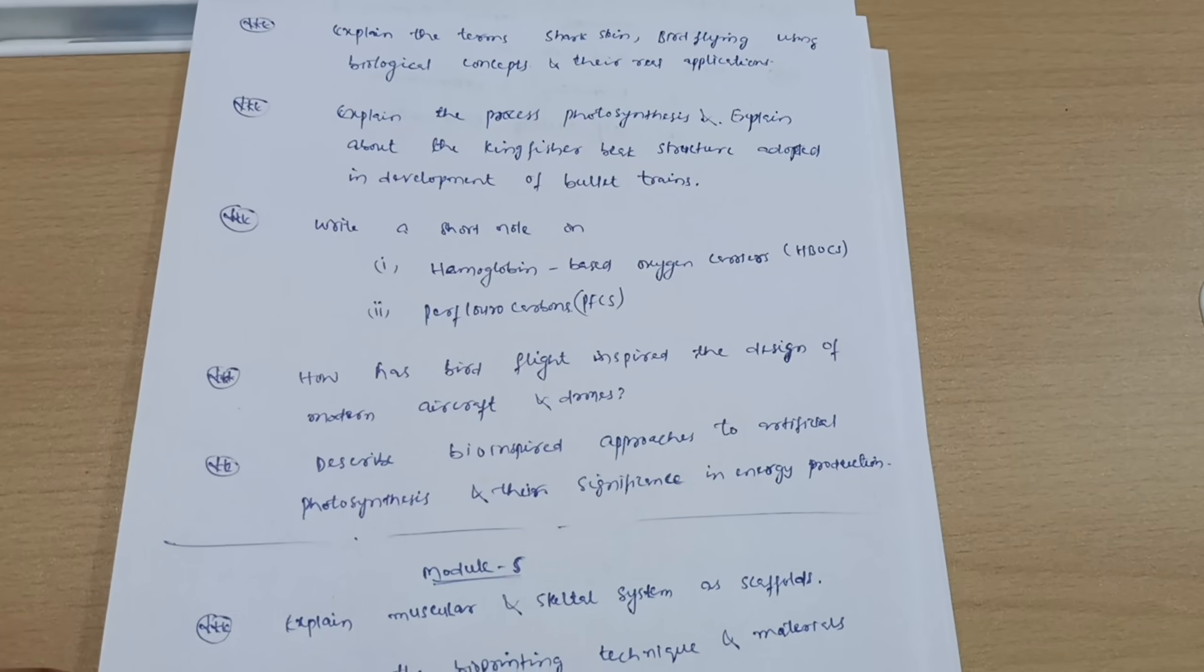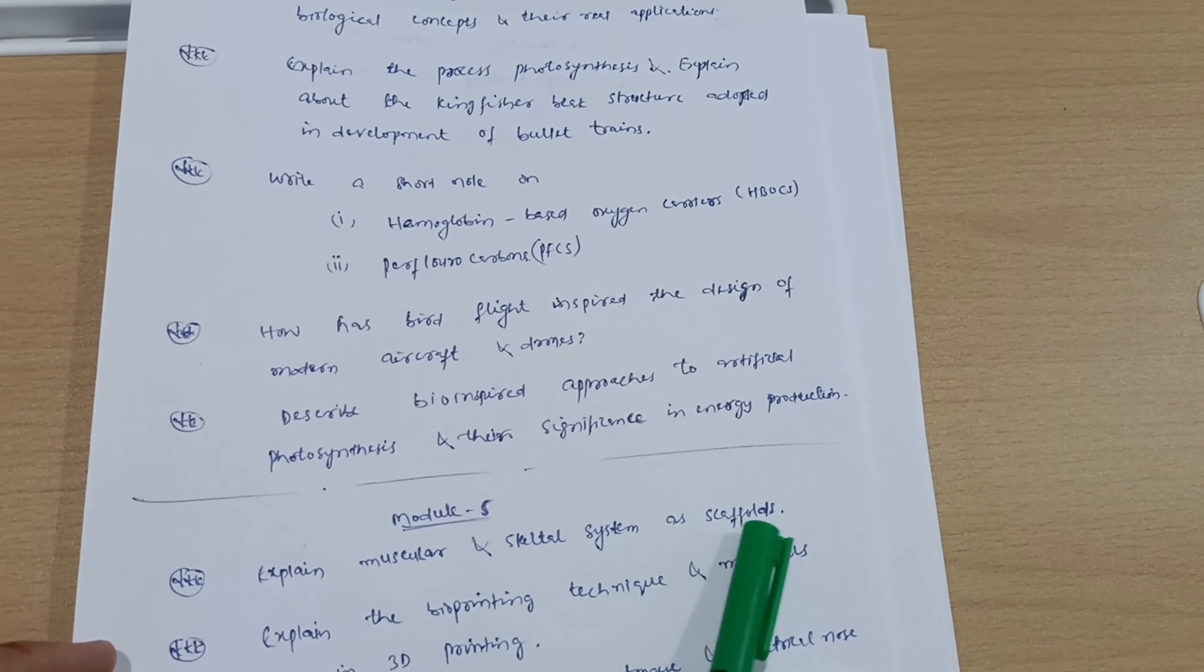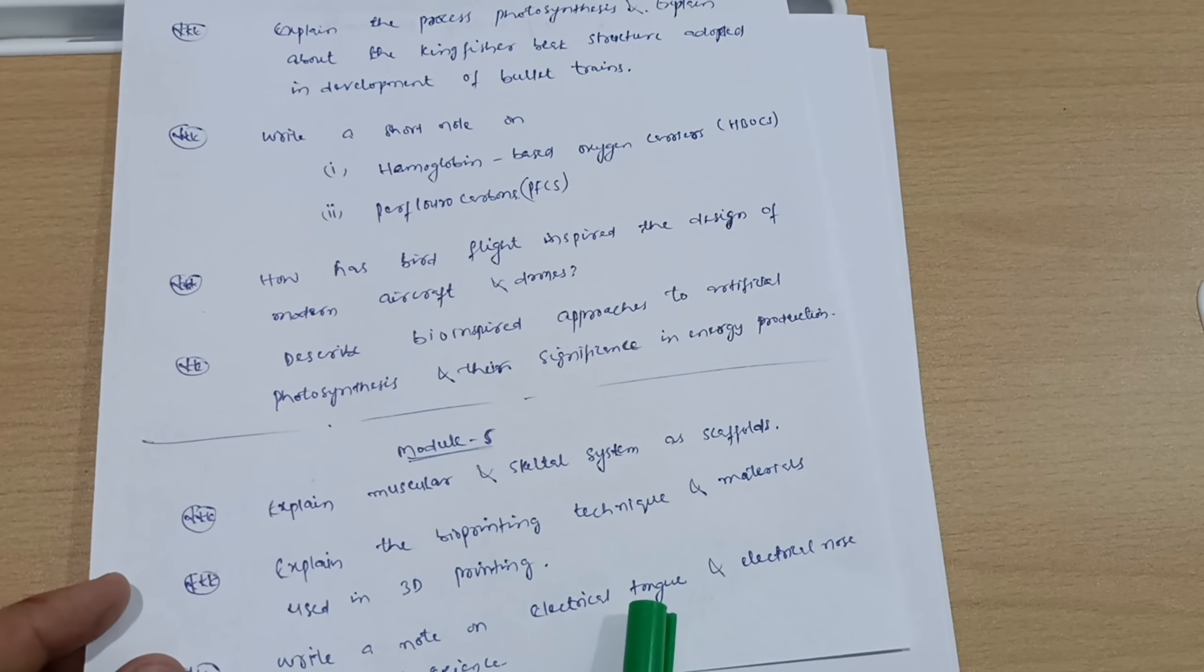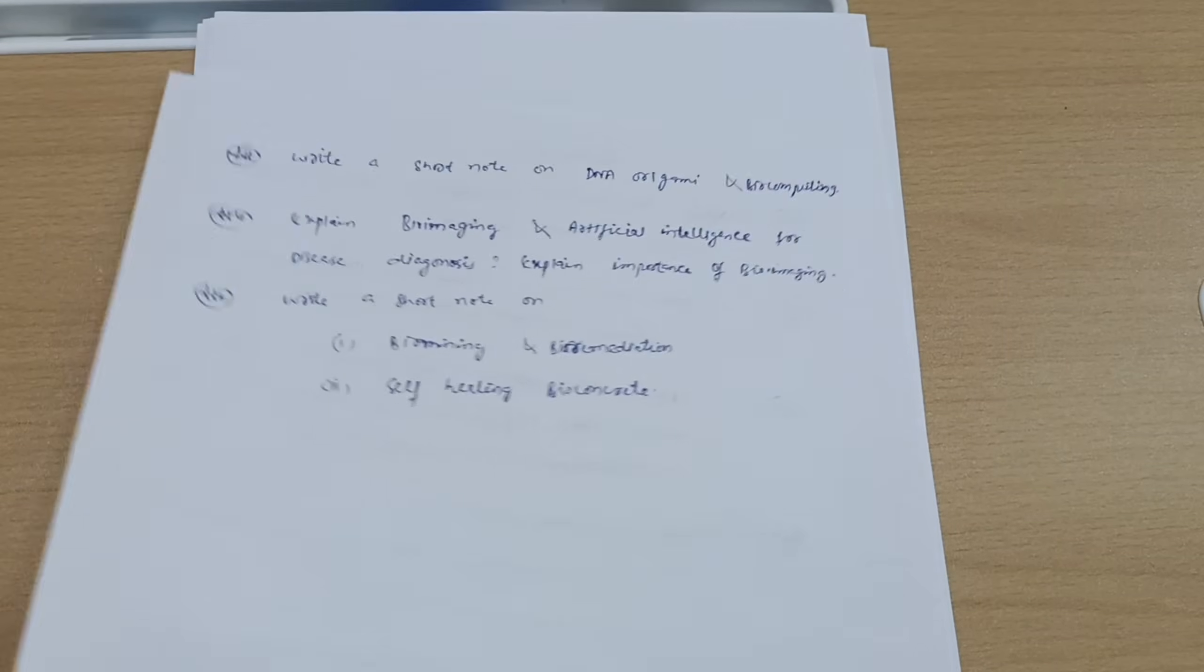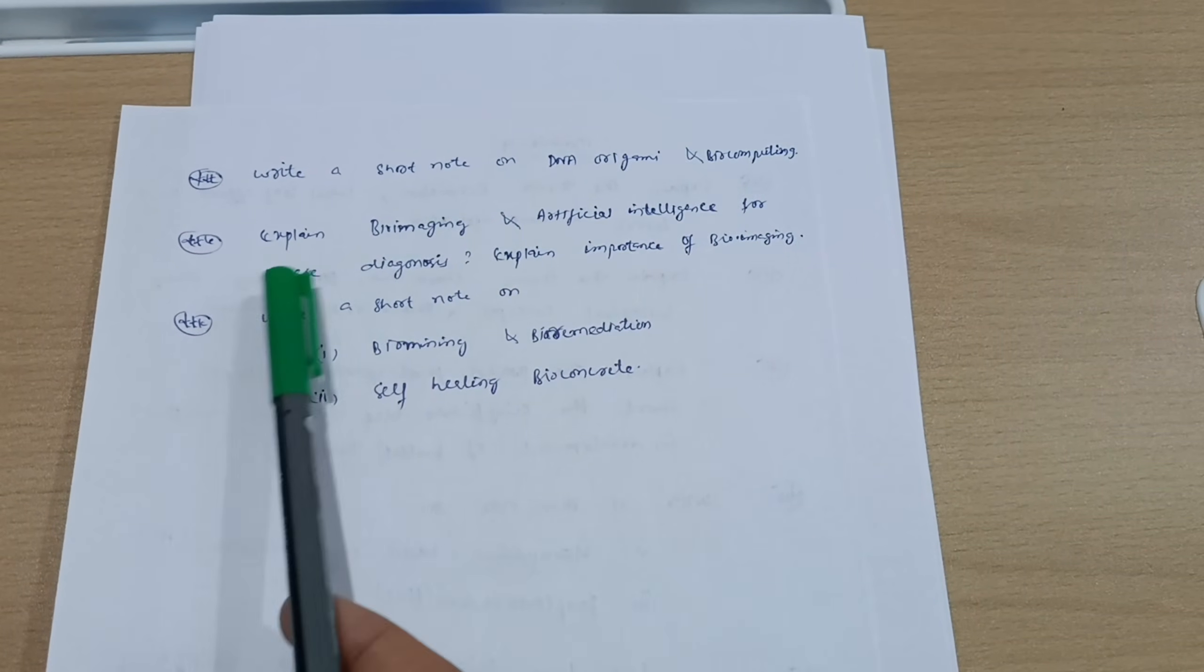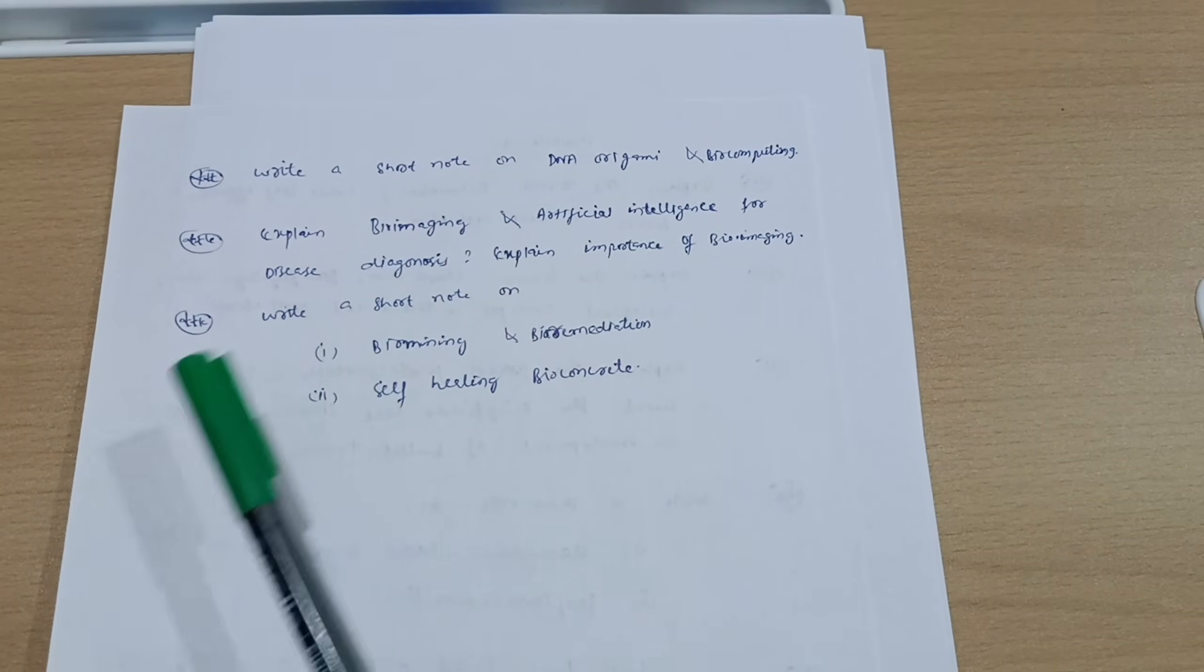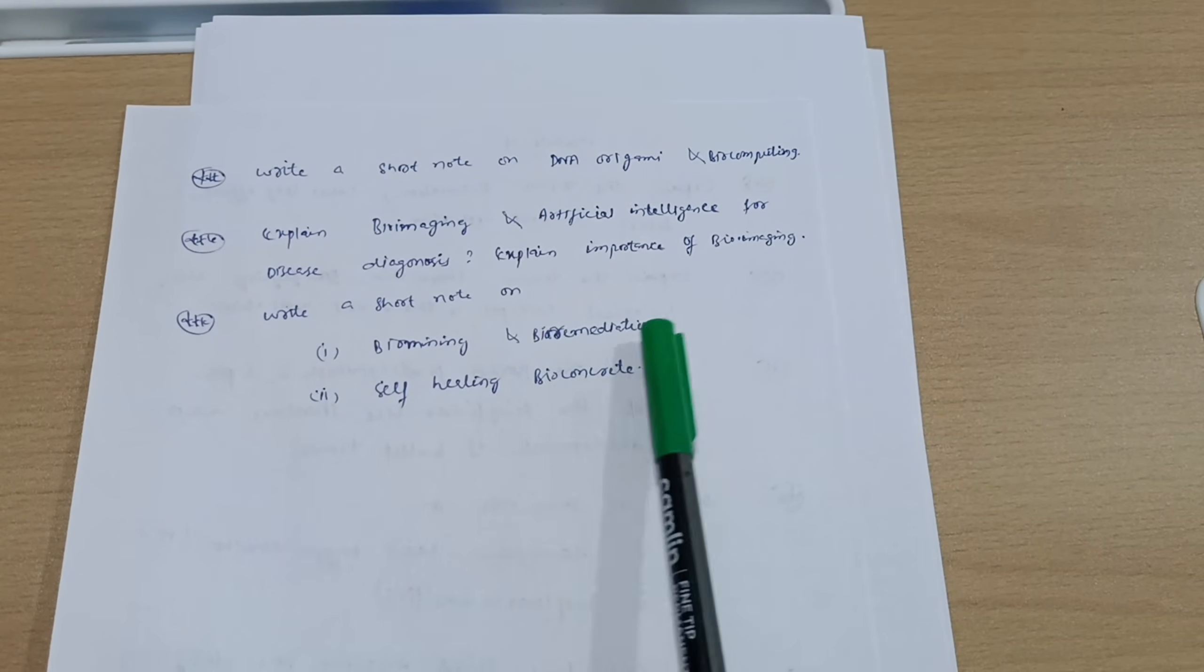Now Module 5: explain muscular and skeletal system as scaffolds. Explain the bioprinting technique and materials used in 3D printing. Write a short note on electrical tongue and electrical nose in food science. Write a short note on DNA origami and biocomputing. Explain bioimaging and artificial intelligence for disease diagnosis. Explain importance of bioimaging. Write a short note on biomining and bioremediation and self-healing bio concrete.